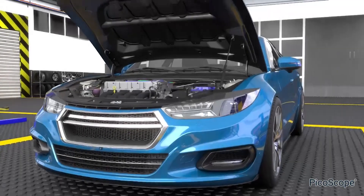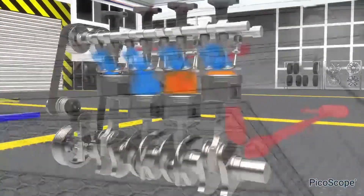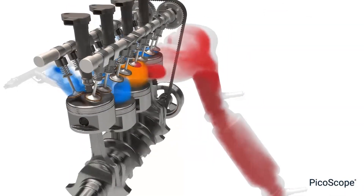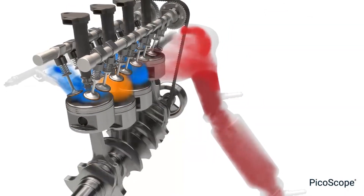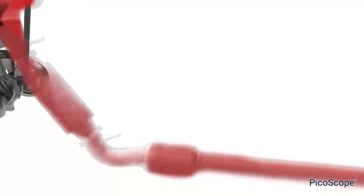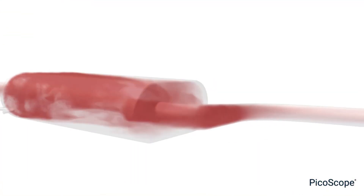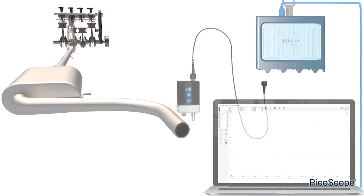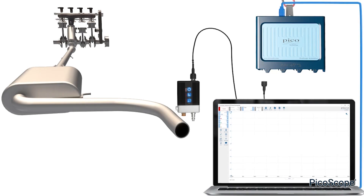Possibly the least intrusive WPS pressure transducer test you can carry out is measuring exhaust gas pulsations, yet it's one that yields a wealth of information regarding the engine running condition from both a combustion and mechanical perspective.